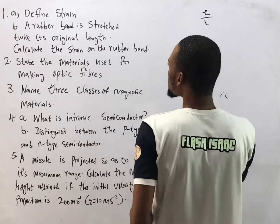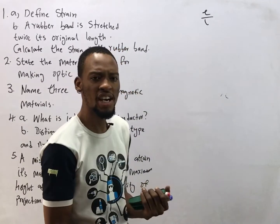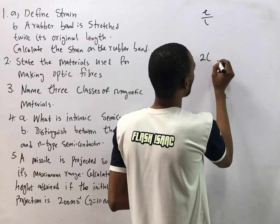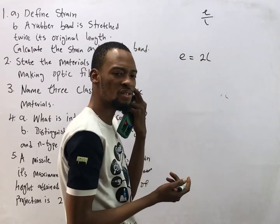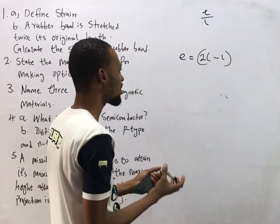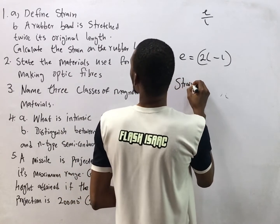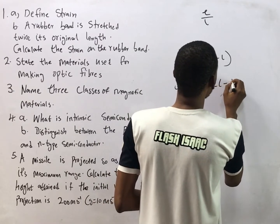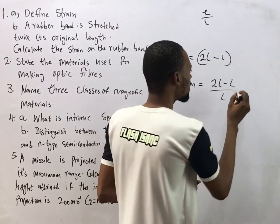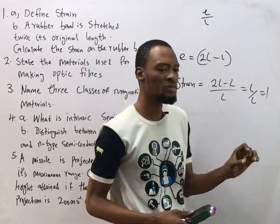Part b says a rubber band is stretched to twice its original length. Extension equals 2L minus the original length L, so the new extension is L. Strain is therefore extension over length: (2L - L) over L = L/L = 1. So the strain is 1, meaning the object has been stressed two times its original length.